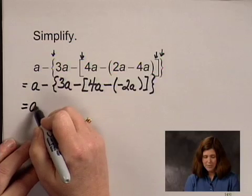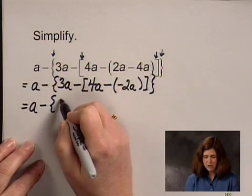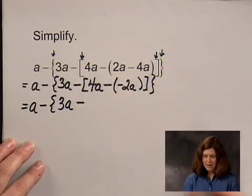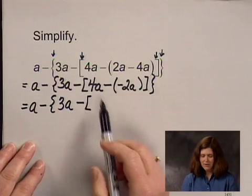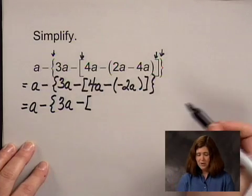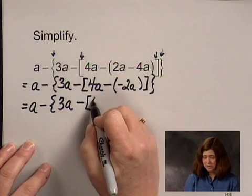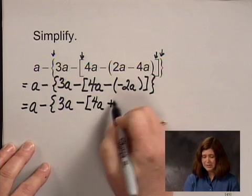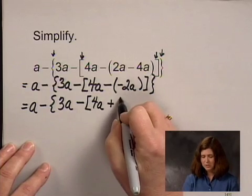So again, I'll copy what I'm not going to change this time. And in the brackets, I have 4A minus a negative 2A. Well, I'm going to rewrite that as an addition of 4A plus the opposite of negative 2A, which is 2A.